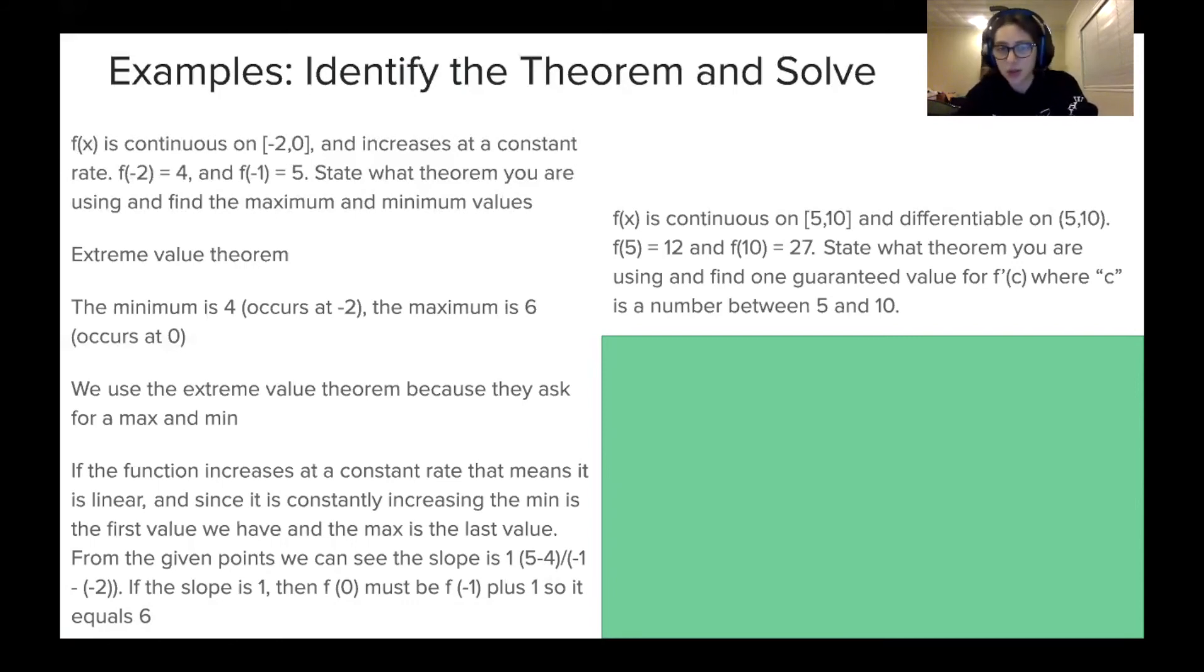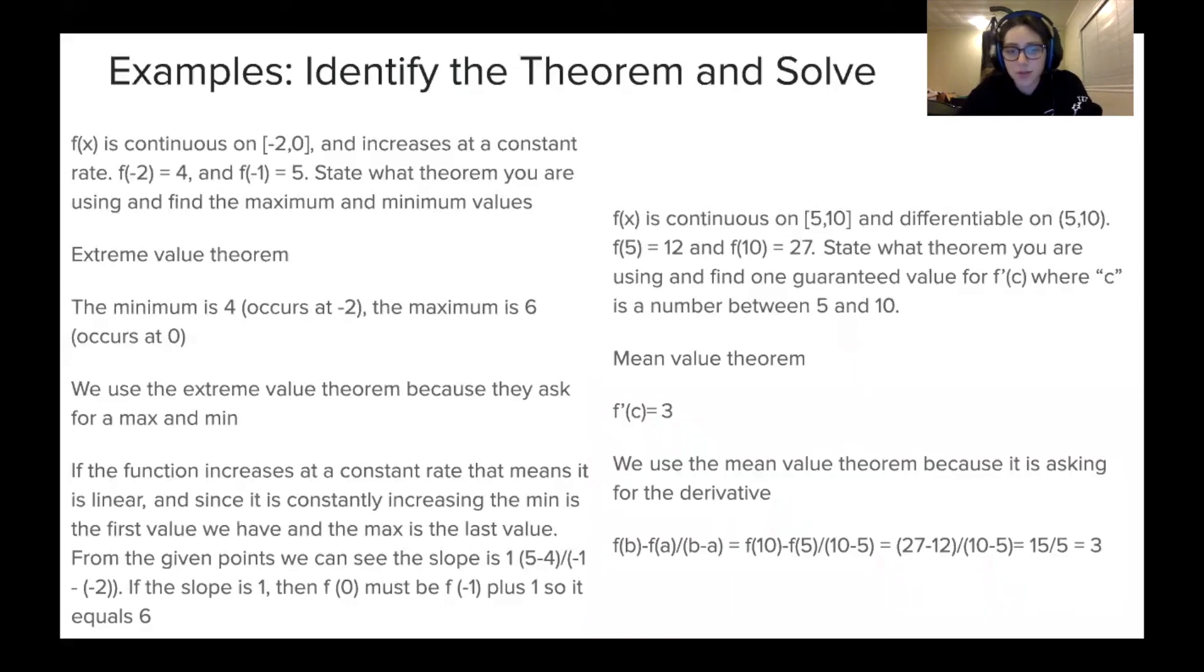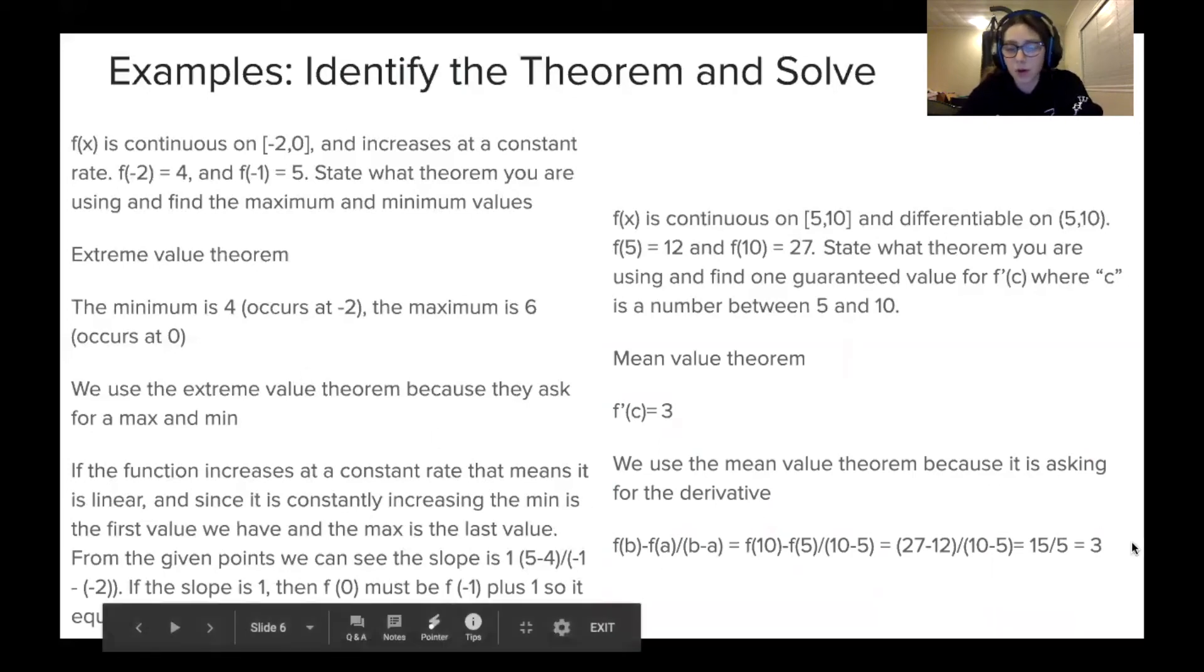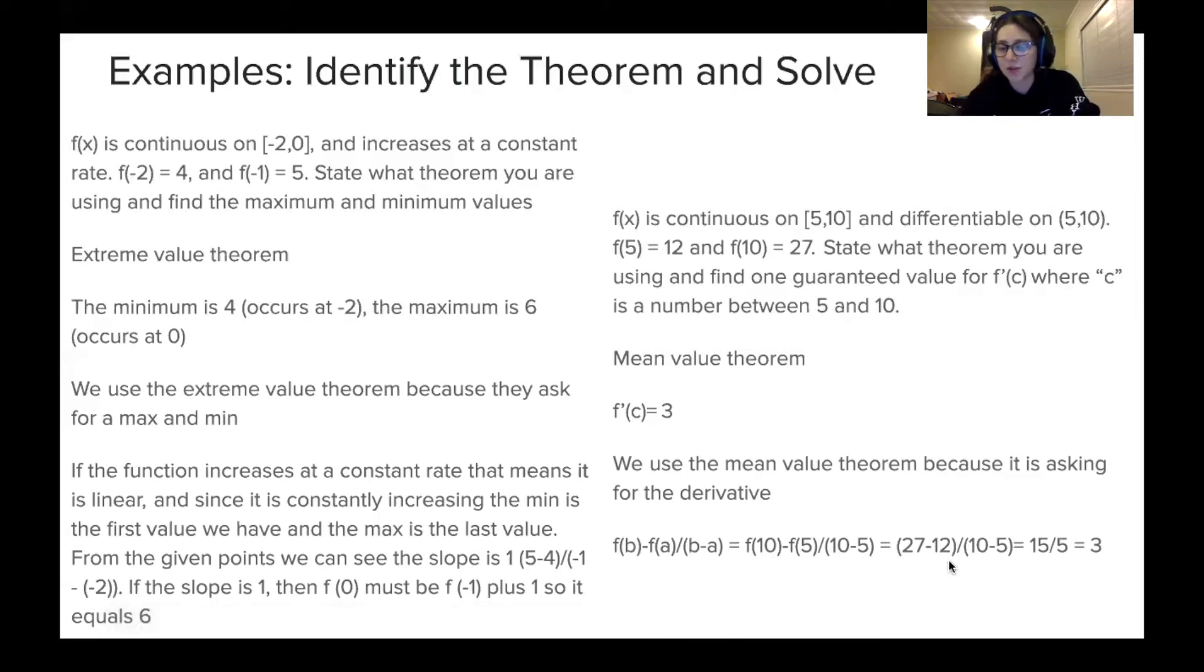Now, for this next problem, we have f(x) is continuous on a closed interval from 5 to 10 and differentiable on that open interval. They give you f(5) is 12, and f(10) is 27. What theorem are you using? And find one guaranteed value of f'(c), where c is a number between 5 and 10. So the answer to this, it's the mean value theorem, and the answer is 3. So we're using the mean value theorem because the question is asking for the derivative, so that means we're using the mean value theorem. Now, I wrote all the math out here. I'll read it quickly. So this is the formula, f'(c) equals [f(b) - f(a)] / (b - a), and then b is the greater number, so b is 10, and then a is 5, so [f(10) - f(5)] / (10 - 5). That's (27 - 12) / (10 - 5), which simplifies that to 15/5, which equals 3.